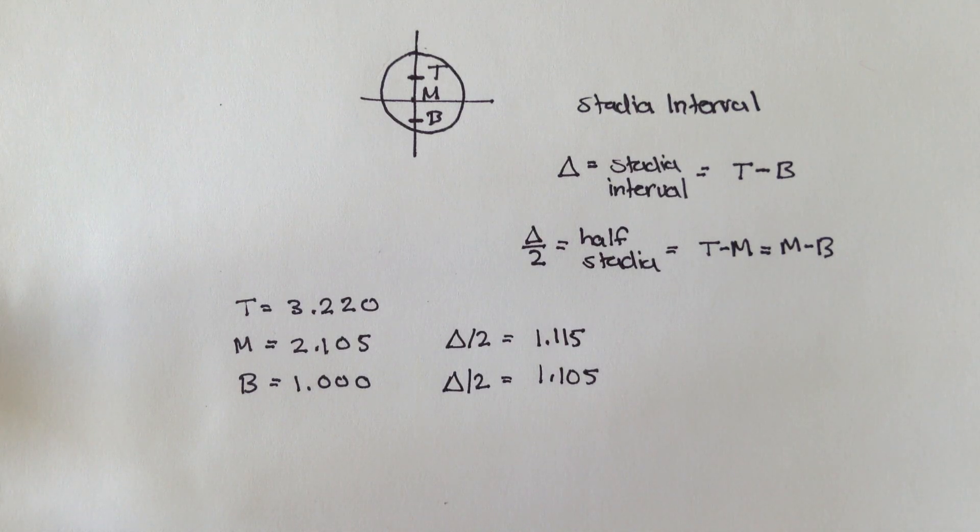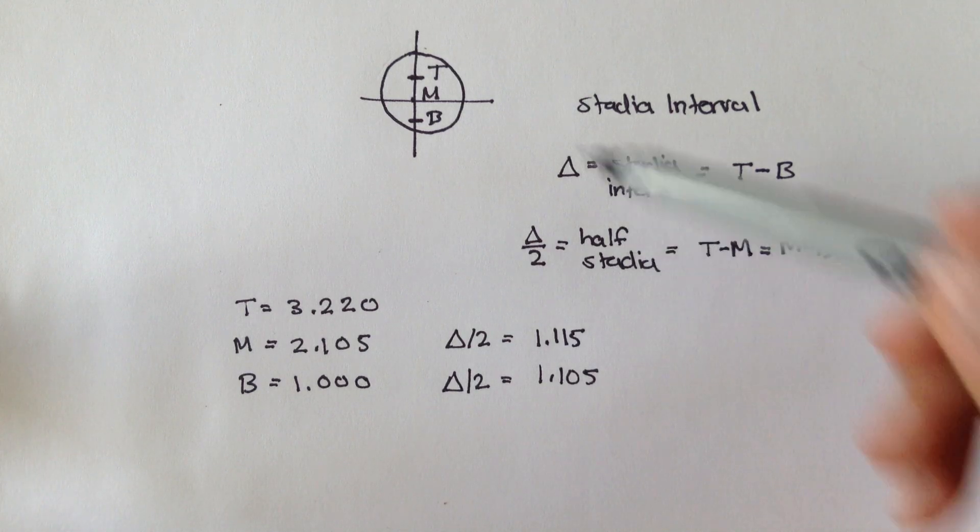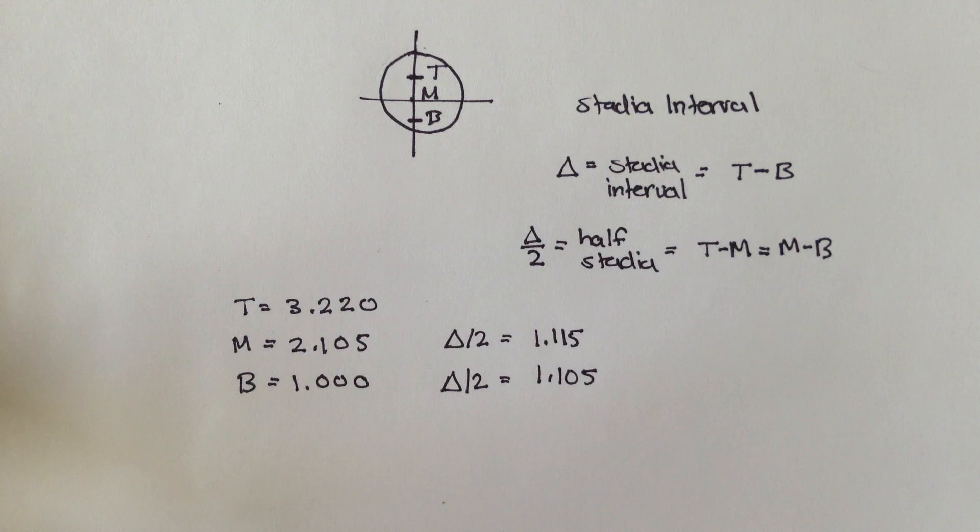If it's good, you keep going, you keep measuring the other points. If not, you'd want to reconsider measuring the point where they're not equal. The top minus middle is not equal.